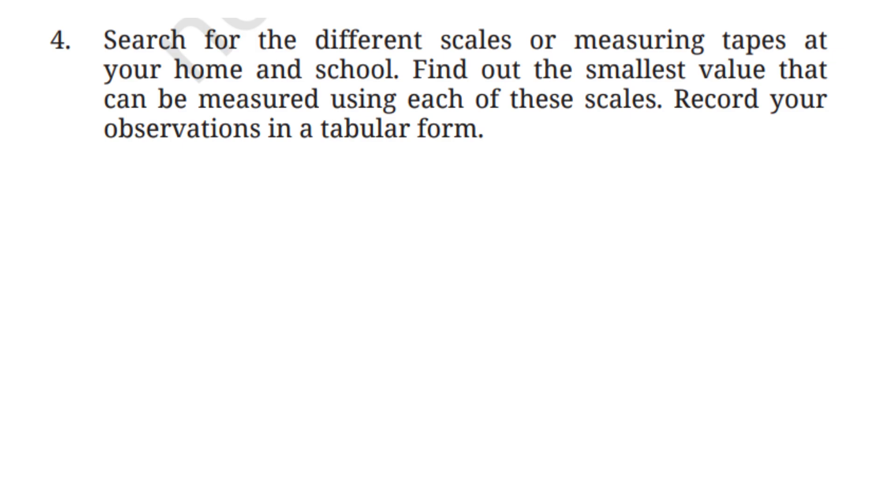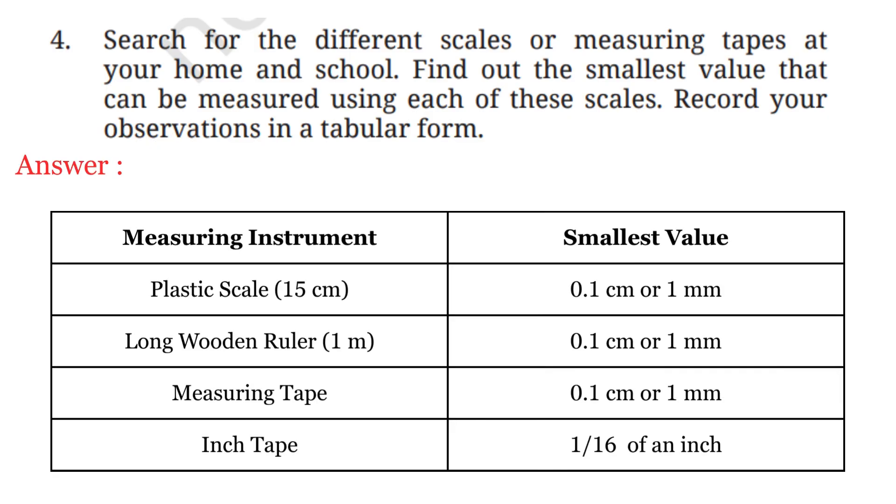Question No. 4: Search for the different scales or measuring tapes at your home and school. Find out the smallest value that can be measured using each of these scales. Record your observations in a tabular form. So the plastic scale of 15 centimeters which is found in geometry boxes has markings that allow us to measure lengths as small as 1 millimeter or 0.1 centimeters. The long wooden ruler of 1 meter usually found in classrooms also has small divisions that help measure up to 1 millimeter accurately. The measuring tape commonly used at home or in tailoring can also measure small lengths up to 1 millimeter. The inch tape which is often used in carpentry can measure lengths as small as 1/16th of an inch, which is a very fine measurement in the imperial system.